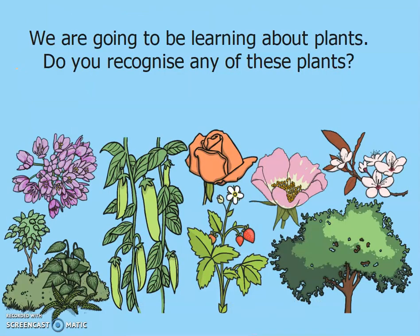So first things first, do you recognise any of these plants? I can see a big tree here — that might be an oak tree. This one looks like a rose. What about these — do we recognise the thing that's growing on the tree? Some of you might already know some different types of plants, which is amazing.